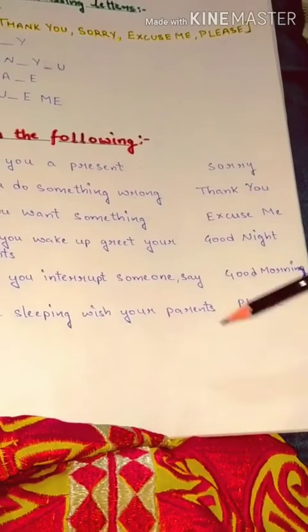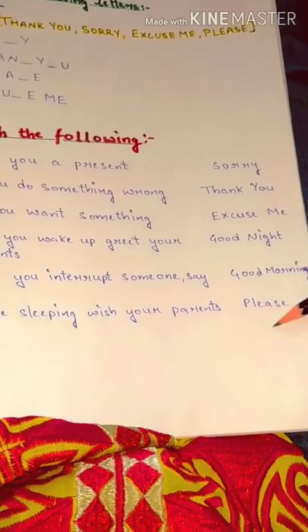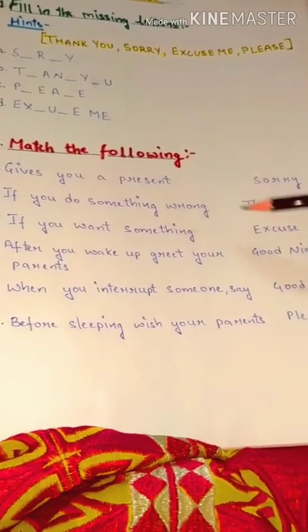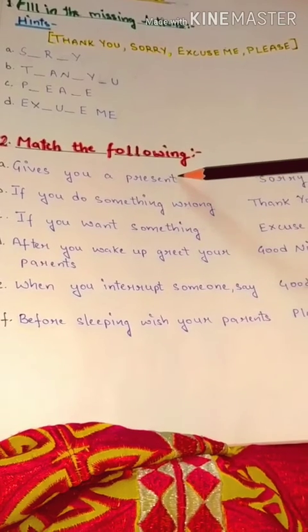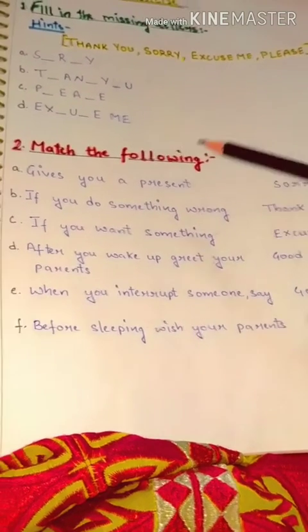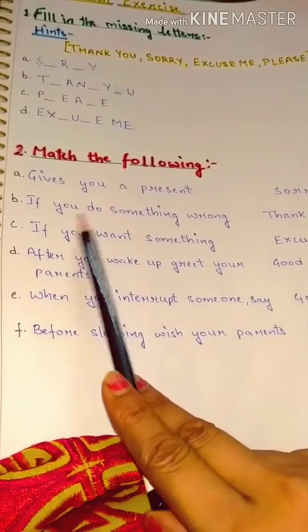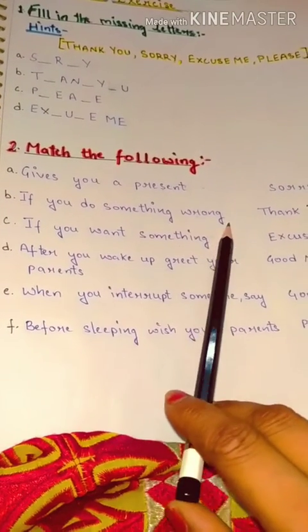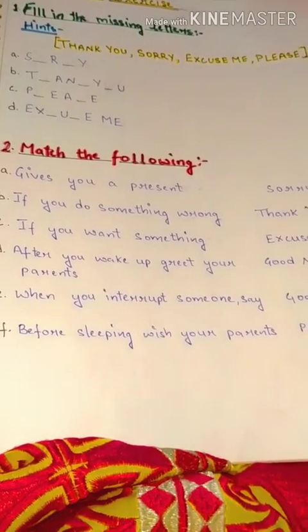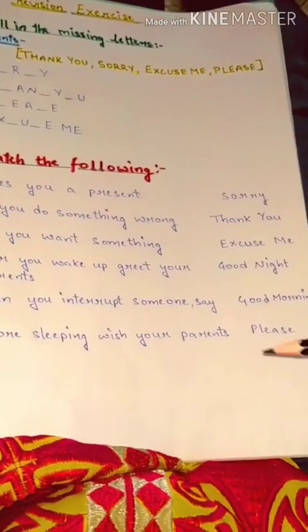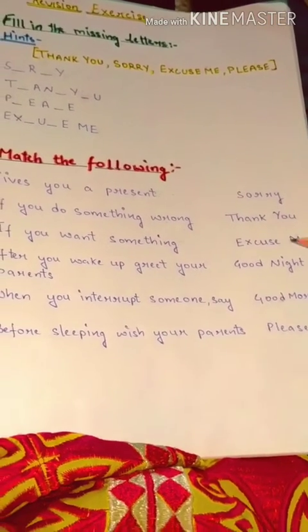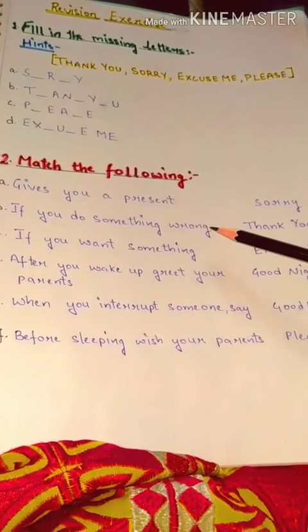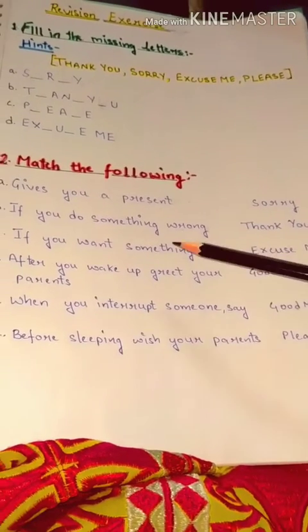Find the word from the column and match it to the sentence. Number B: if you do something wrong — something wrong means if you do any mistake — then what will you say? Sorry. Now draw a line from this sentence to the word that matches.